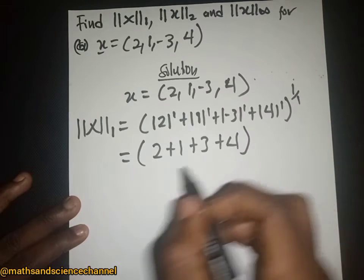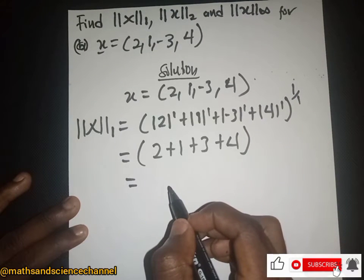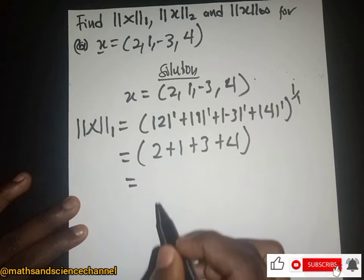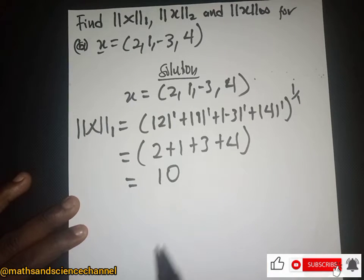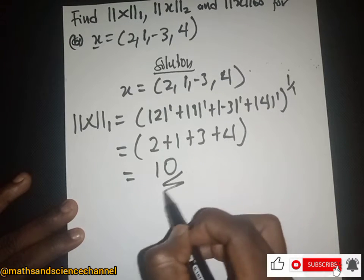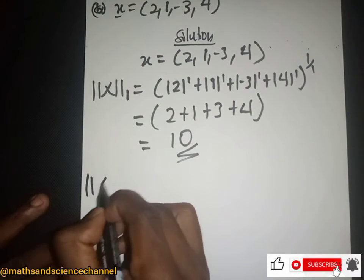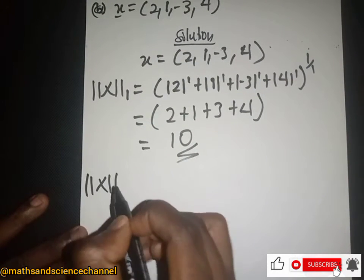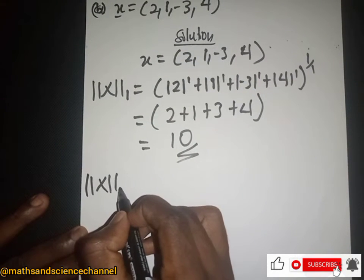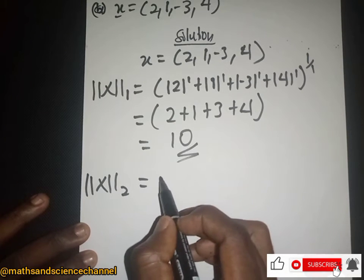This gives us 2 plus 1 plus 3 plus 4, which is just going to give us 10. So the vector norm 1 equals 10.